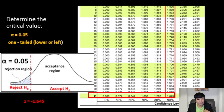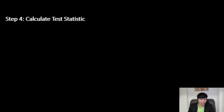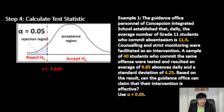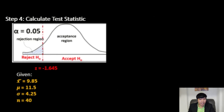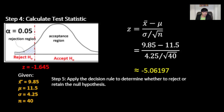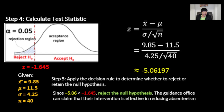Next, calculate the test statistic. Given: sample mean equals 9.85, population mean equals 11.5, standard deviation equals 4.25, and sample size equals 40. Plugging into the formula gives approximately negative 5.06. Since negative 5.06 is less than negative 1.645, the computed value falls in the rejection region — we reject the null hypothesis. This means the guidance office can claim that their intervention is effective in reducing absenteeism.